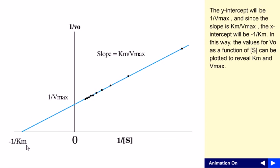Because as we can see, it is in this hemisphere, so it is minus 1 by Km. In this way, the values of V0 as a function of S can be plotted and reveal the Km and the Vmax.